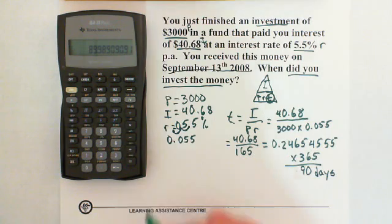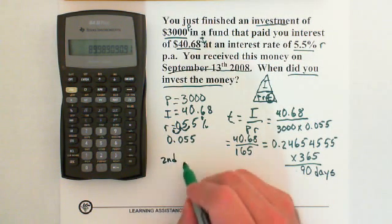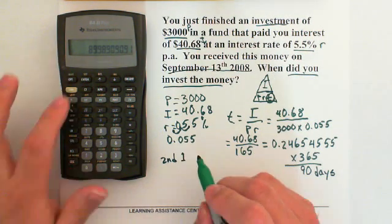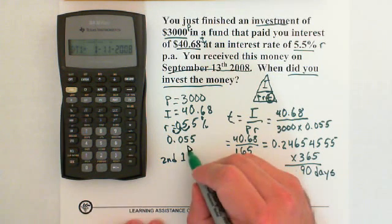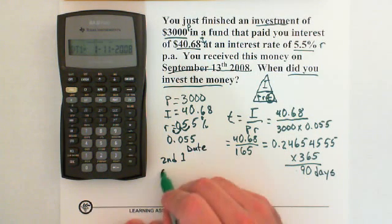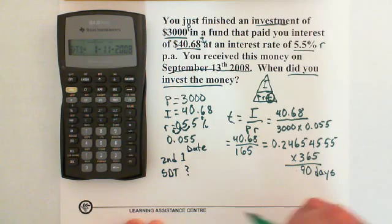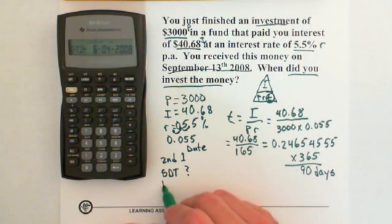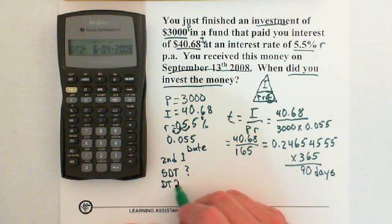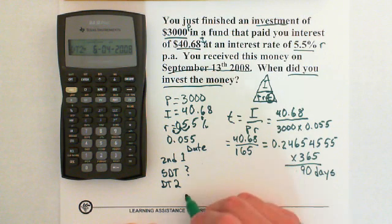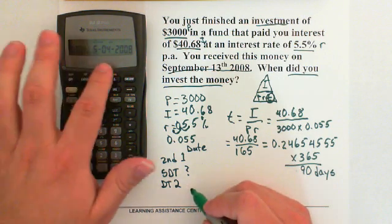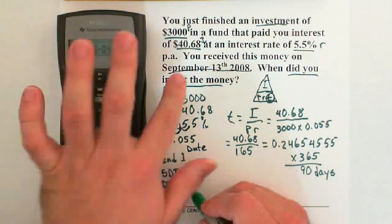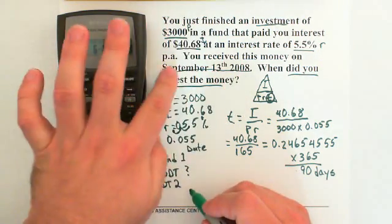So now, to use the date function, we'll go second function one, so that's where the date is. So now the start date is actually what we're solving for, so we're just going to scroll down past the start date to date two. And at date two, now my calculator goes month, day, year, so then September 13, 2008. So September.